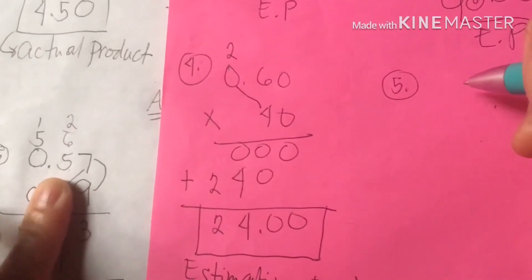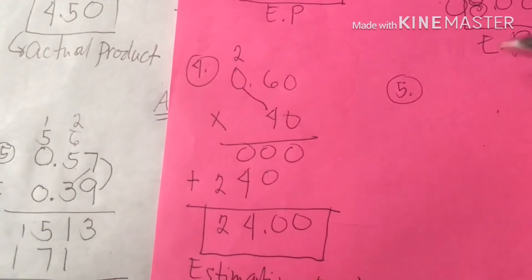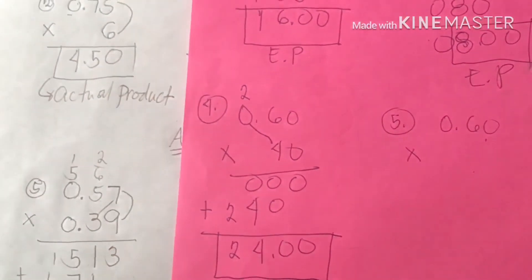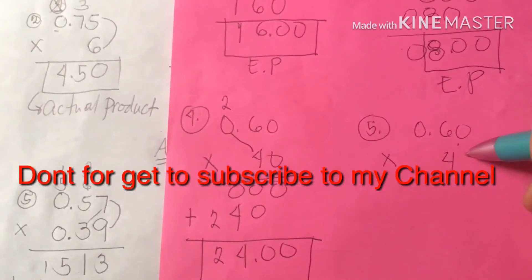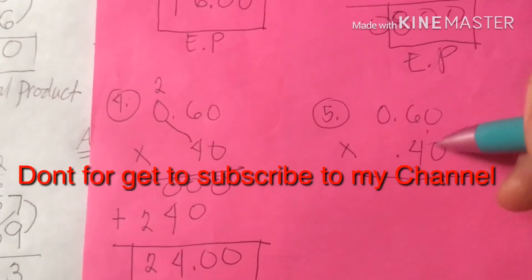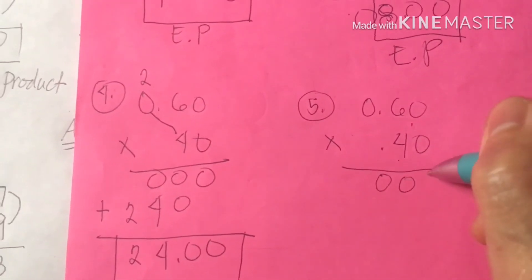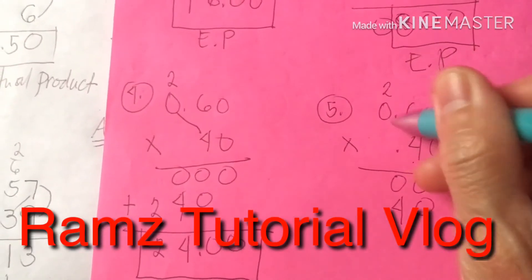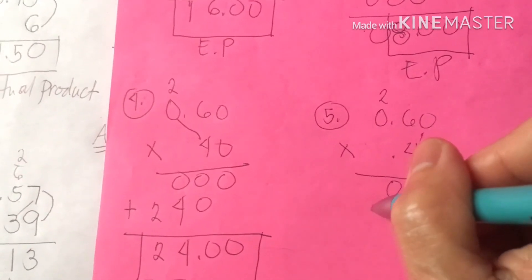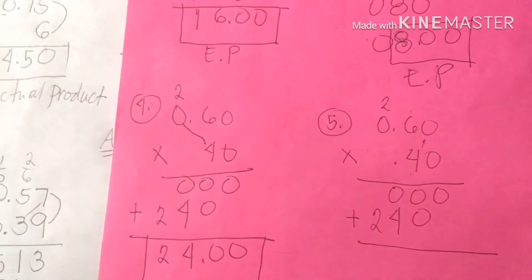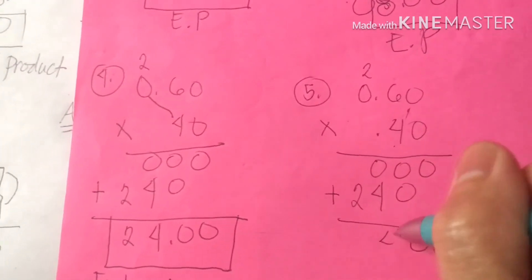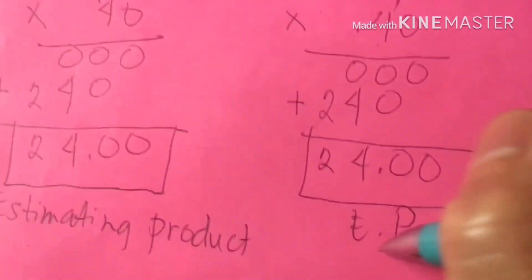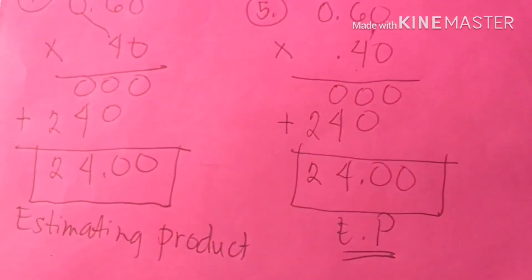Number 5: 0.57 — since 7 rounds up, we write 0.60. And 0.39 rounds up to 0.40. So 0.60 times 0.40. Count the zeros: 1, 2, 3 — then 0, 4, 2. Multiplying: 6 times 4 is 24, bring down 2. Remember, in multiplying zeros the answer must be 0. Counting decimal places — careful about our estimating product for number 5.